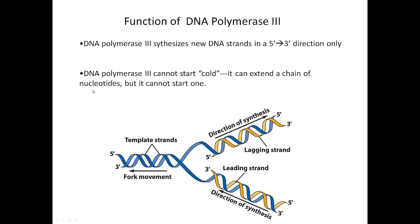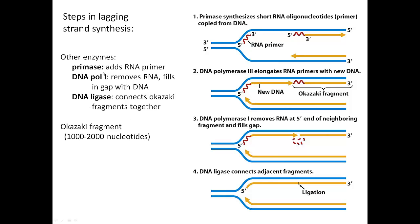Another limitation of DNA polymerase 3 is that it cannot start a new strand de novo — it can't start cold, it has to extend an existing strand of nucleotides. The way the cell gets around this problem is by using an enzyme called primase. Primase makes a little piece of RNA that is complementary to the DNA strand, shown in red. Then DNA polymerase 3 can jump on and continue synthesizing a new DNA strand, shown in yellow.